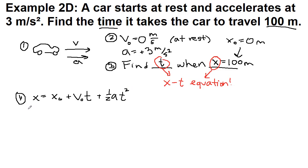So the final position is 100. The initial position is 0. The initial motion is 0 times our unknown time. Plus 1 half times positive 3 times T squared.